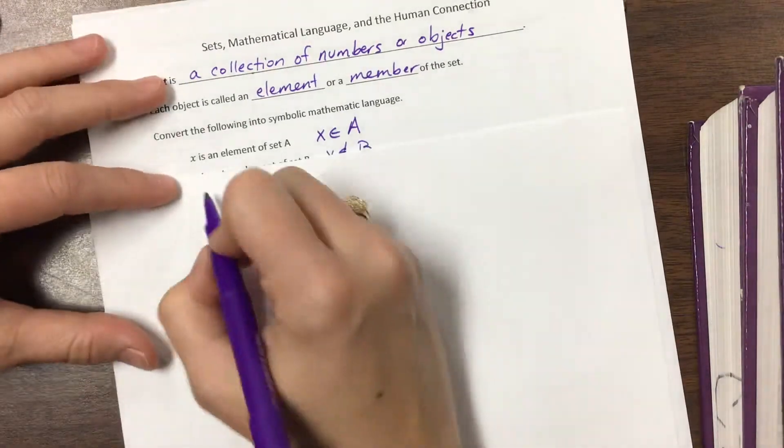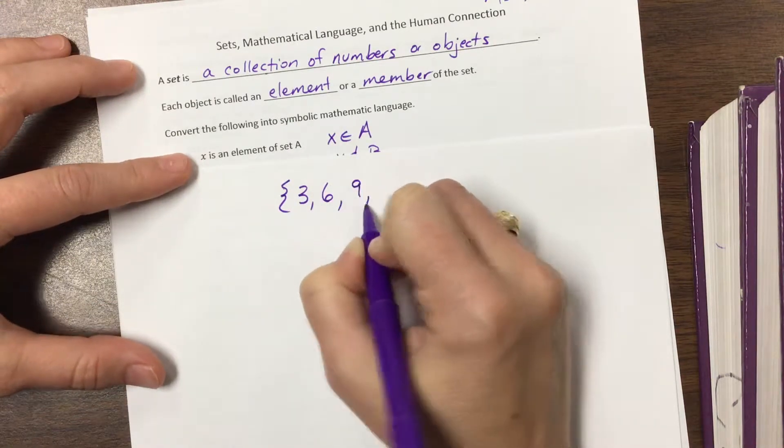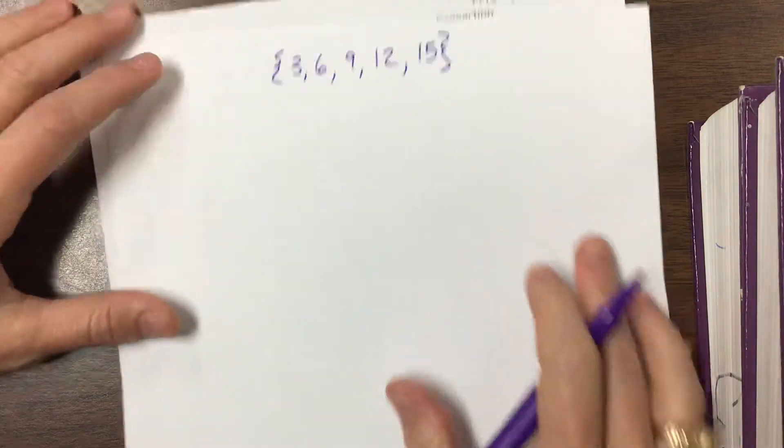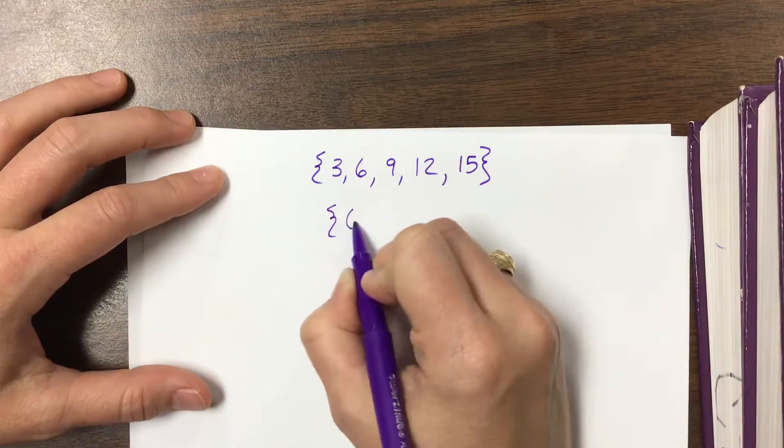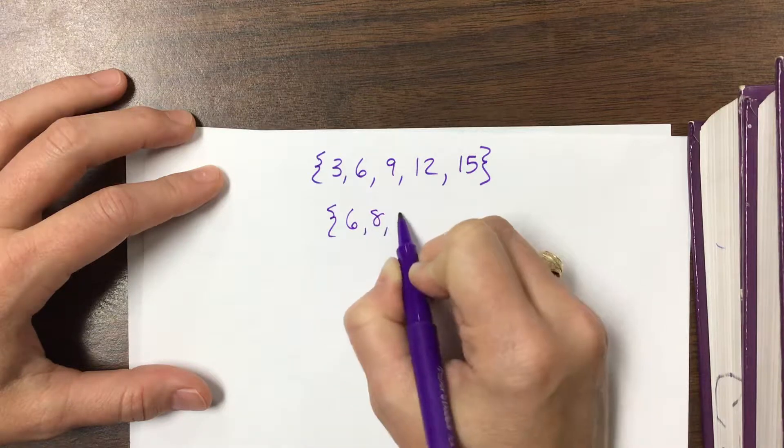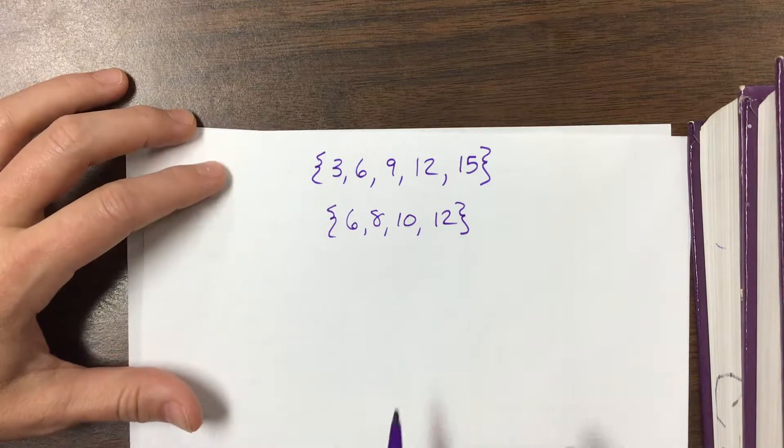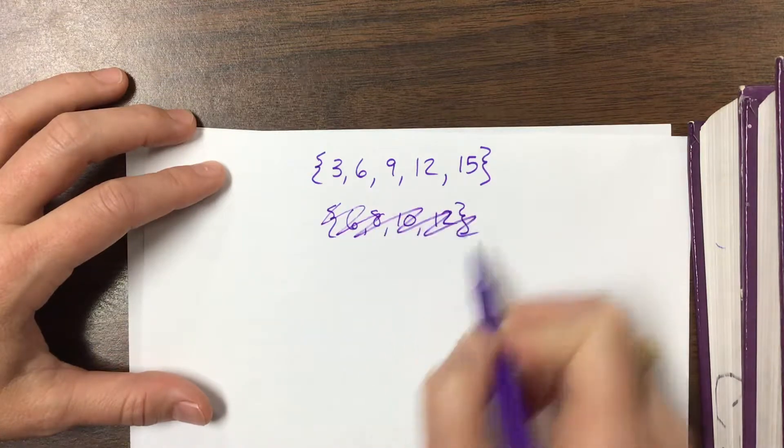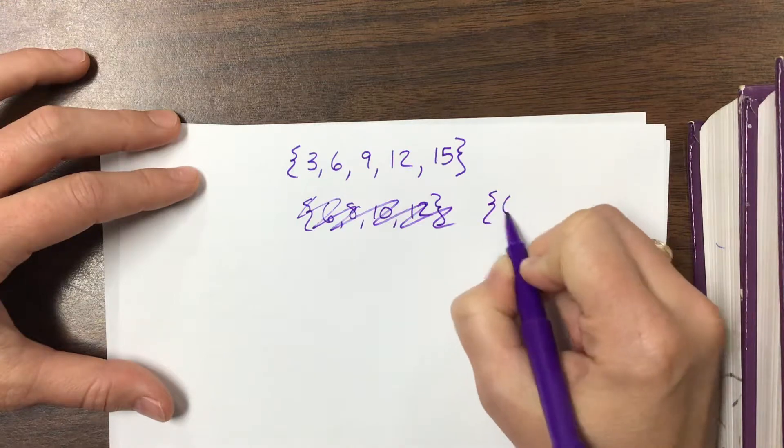So the next thing is sometimes you'll have a set. Let's say we've got the set {3, 6, 9, 12, 15}. Those are some multiples of 3. And then I've got the set {6, 8, 10, 12}. It is the beginning of the school year. Let's say I've got this set that has {6, 12}.